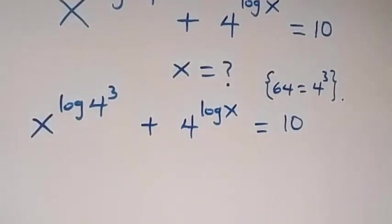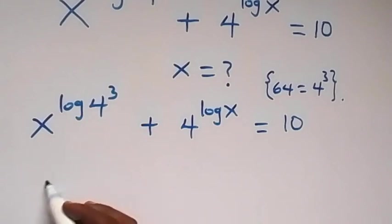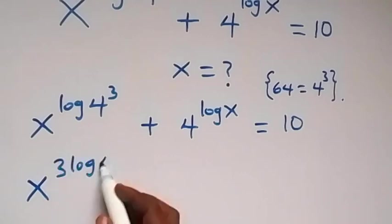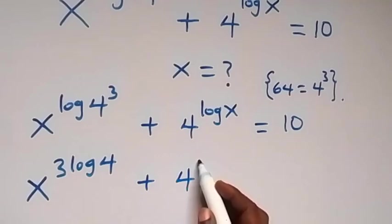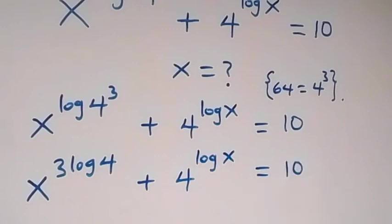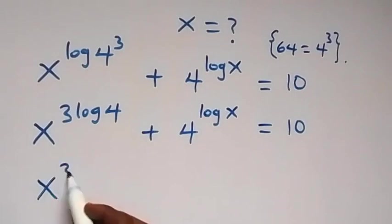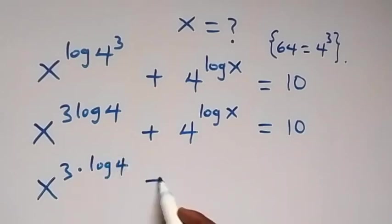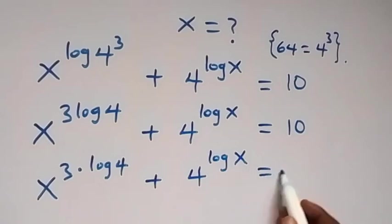From here, we apply the power law of logarithms, and the exponent 3 can move to the front. This becomes x raised to power 3·log 4, then plus 4 raised to power log x, equals 10. We can separate this as x raised to power 3, times log 4, plus 4 raised to power log x, equals 10.